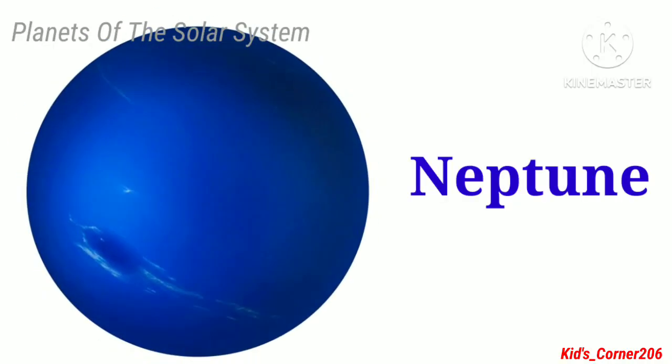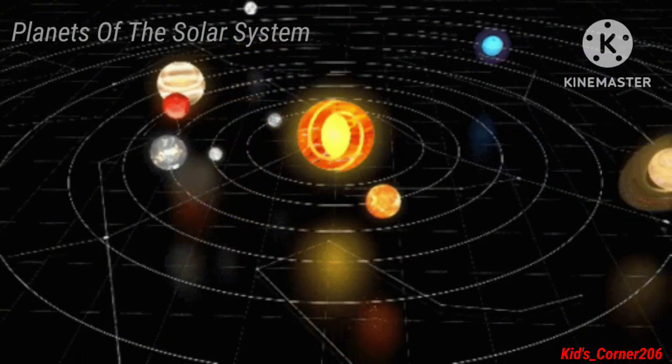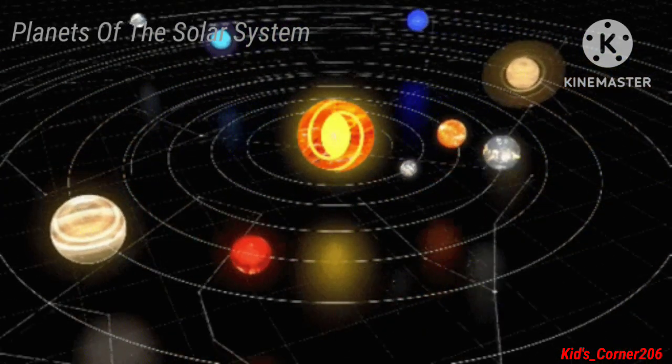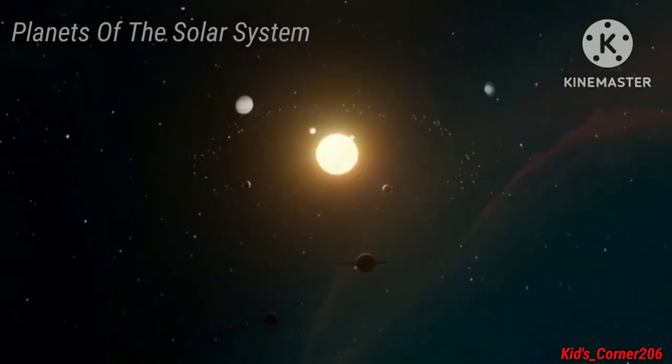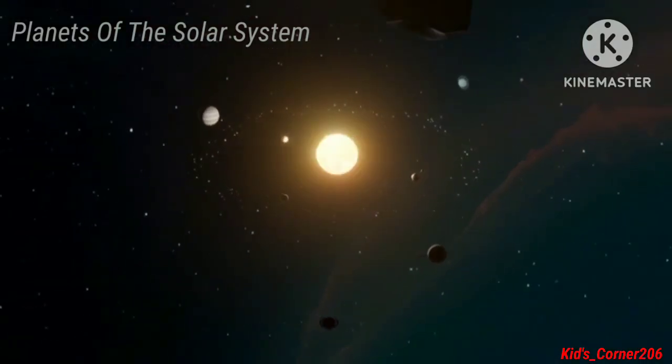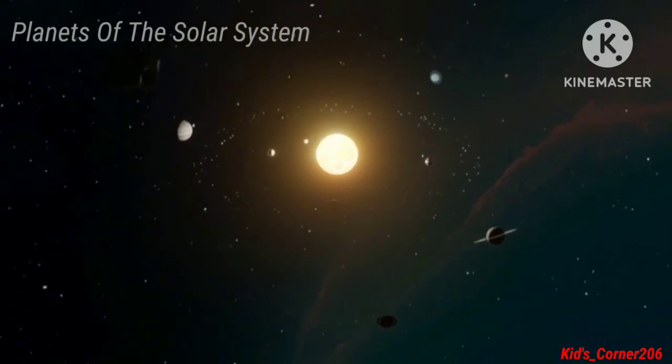The eighth planet of the solar system is Neptune. This planet is the farthest planet from the sun. It is the coldest planet of the solar system because sun rays don't reach it.